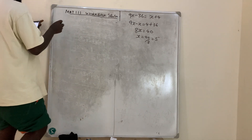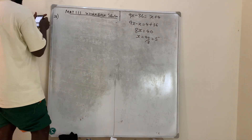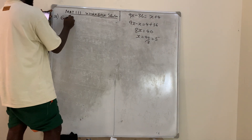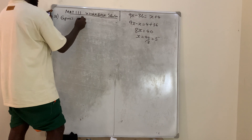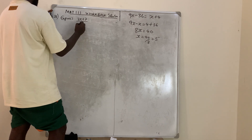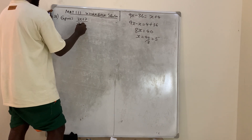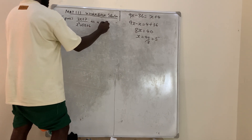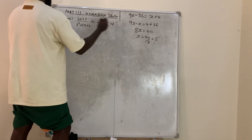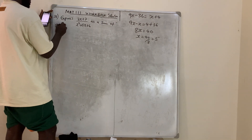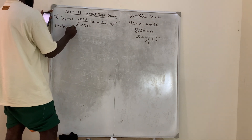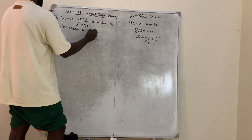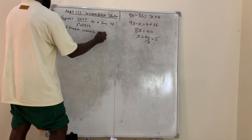Question number 28 said: express (3x + 7) all over (x² + 5x + 6) as a sum of partial fractions.